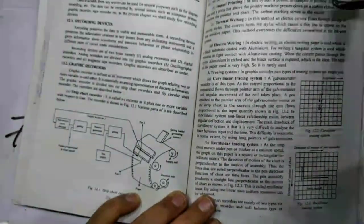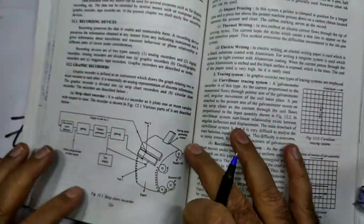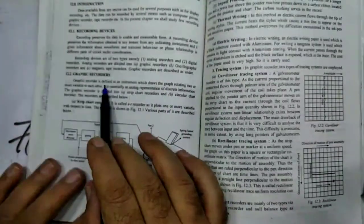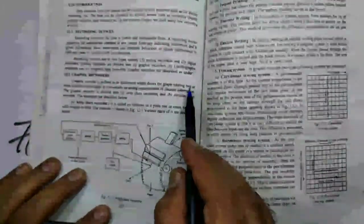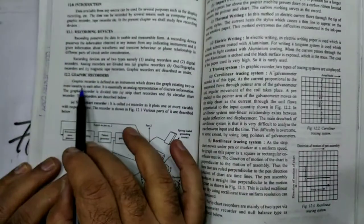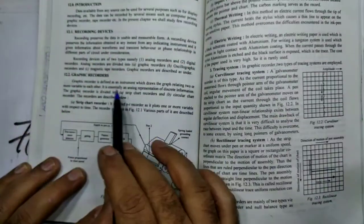So what are graphic recorders? Graphic recorder is defined as an instrument which draws the graph relating two or more variables to each other. It is essentially an analog representation of discrete information.